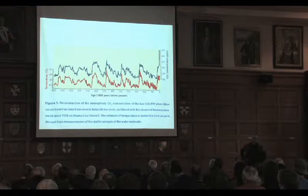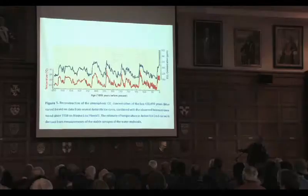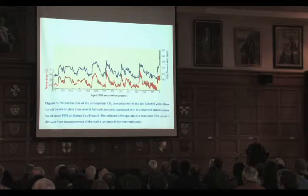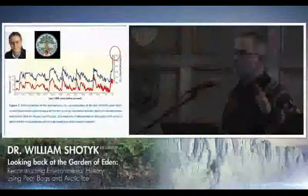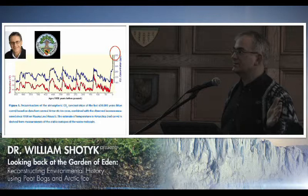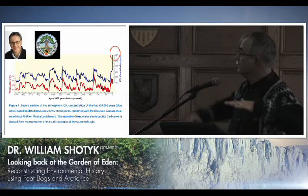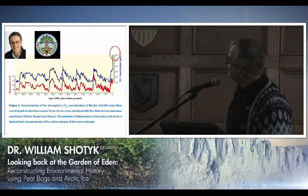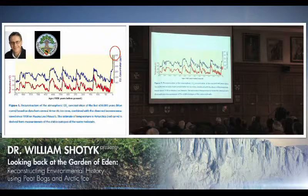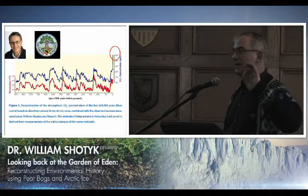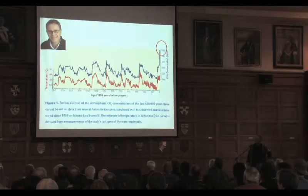A lot of our information about the atmosphere in the past comes from ice cores. This is a graph most of you will be familiar with. In red we see temperature; in blue we see CO₂ concentrations. This is reconstructed from ice cores from Antarctica — a record of atmospheric CO₂ for the past 650,000 years. You can see glacial periods, interglacial periods, warm and cold phases, and CO₂ varying in sync with temperature. CO₂ concentrations during this entire period never exceeded 300 parts per million, and today we're at about 380 parts per million and rising. Ice cores are very valuable archives of atmospheric change.